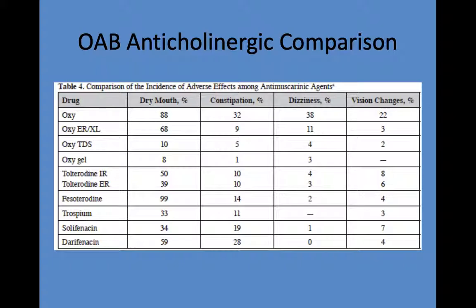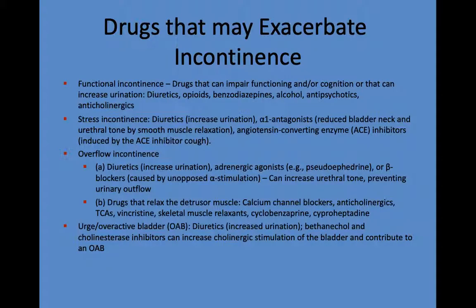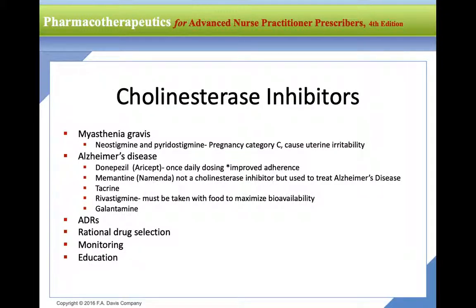Cholinesterase inhibitors are used for myasthenia gravis and Alzheimer's disease. The most common ones are donepezil, rivastigmine, galantamine, and memantine — though memantine is not a cholinesterase inhibitor but is used for Alzheimer's. They are all equally effective, so selection is based on adverse drug reactions and whether the drug is metabolized by the kidney or liver, depending on the patient's organ function.